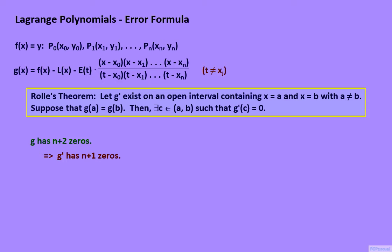Extending Rolle's theorem to cover g' assuming that g'' exists, then we should be able to find zeros of g'' in the gaps formed by the zeros of g'. Therefore, g'' will have at least n zeros. Assuming that we can take derivatives of g as many times as we want, the number of guaranteed zeros will keep on decreasing by 1. Moreover, the number of guaranteed zeros plus the order of the derivative is equal to n+2.